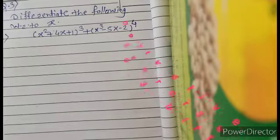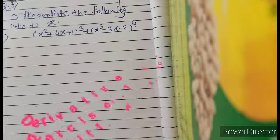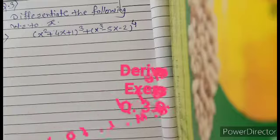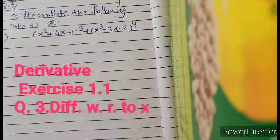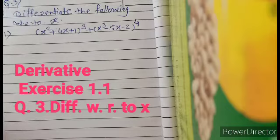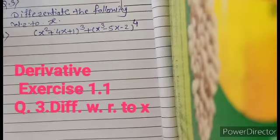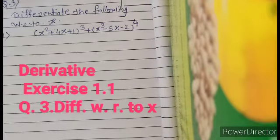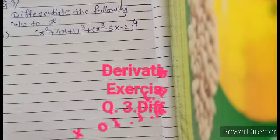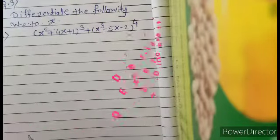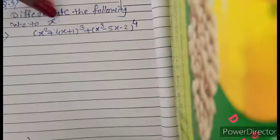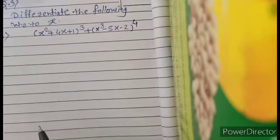Hello friends. In the last lecture we learned about question number 2 in exercise 1.1 of the chapter on derivatives. Today we are going to discuss question 3 in chapter 1, derivatives, exercise 1.1. The same question is here: differentiate the following with respect to x.